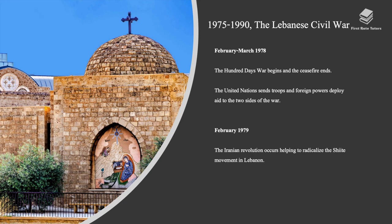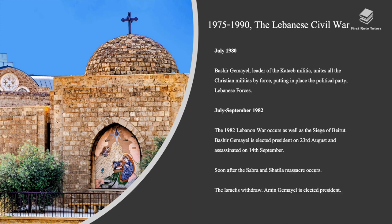Between February and March 1978, the Hundred Days War began and the ceasefire ended. The United Nations sent troops and foreign powers deployed aid to the two sides of the war. On February 1979, the Iranian revolution occurred, helping to radicalize the Shiite movement in Lebanon. In July 1979, Bashir Gemayel, leader of the Kataeb militia, united all the Christian militias by force, putting in place the political party Lebanese Forces. Between July and September 1982, the Lebanon War occurred as well as the Siege of Beirut. Bashir Gemayel was elected president on the 23rd of August and assassinated on the 14th of September. Soon after, the Sabra and Shatila massacre occurred. Israel withdrew and Amin Gemayel was elected president.